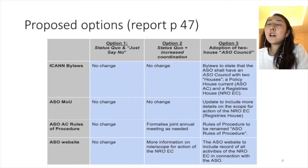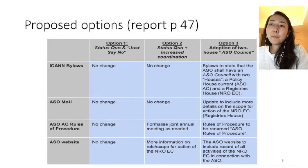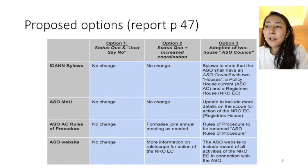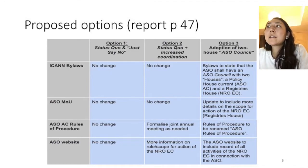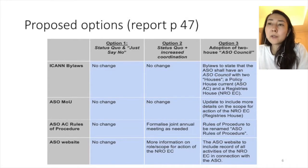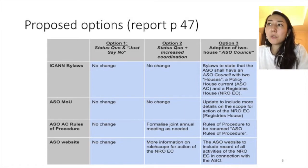Option two is to make some improvements with focus on better coordination between the NREC and ASO AC, as well as clarifications on the website or the documents. The third option is suggesting some structural changes around the ASO for better clarity, which is what we call the two-house ASO Council model.